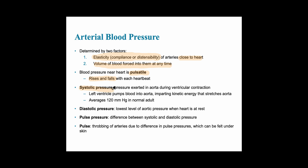The systolic pressure is the pressure exerted in the aorta during ventricular contraction. We're focusing more on the left side, though the right side does the same thing at much lower pressure. The average systolic is 120 mmHg or more in adults. The diastolic is the relaxation phase of the heart — the lowest level of aortic pressure. The pulse pressure is the difference between the two; for example, 120 over 80 gives a pulse pressure of 40. The pulse is the throbbing of the arteries due to this difference, felt under the skin in key areas.